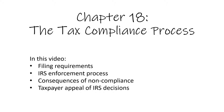In chapters one and two, we examined what taxation is and how the United States federal government established its taxation policy. In this chapter, we'll look at the tax compliance process, the filing requirements, how the IRS enforces filing requirements, the consequences of non-compliance, and how a taxpayer can appeal IRS decisions.